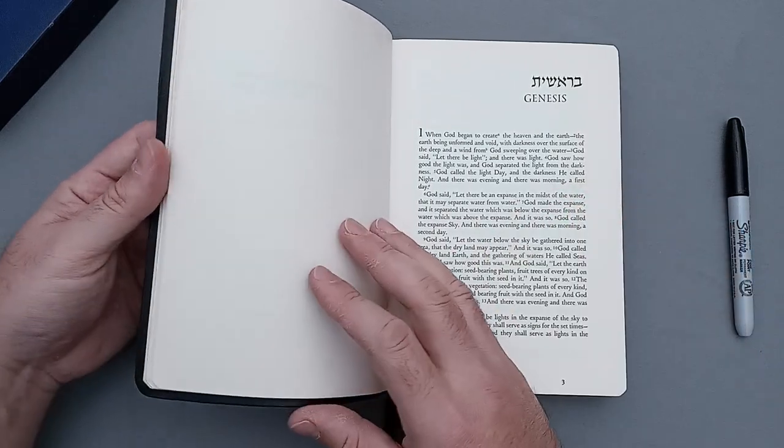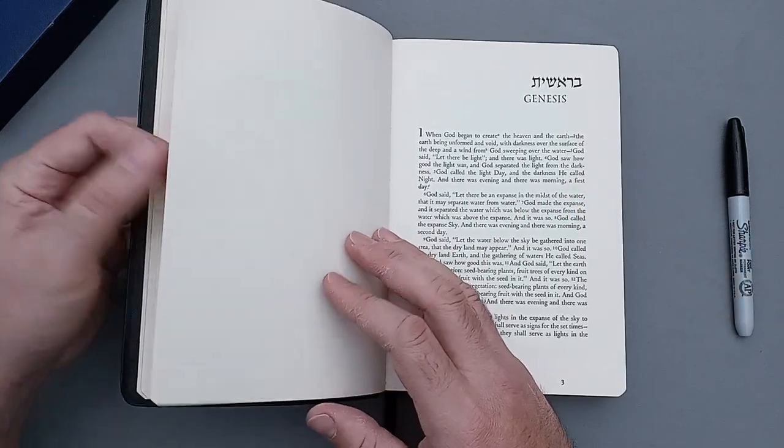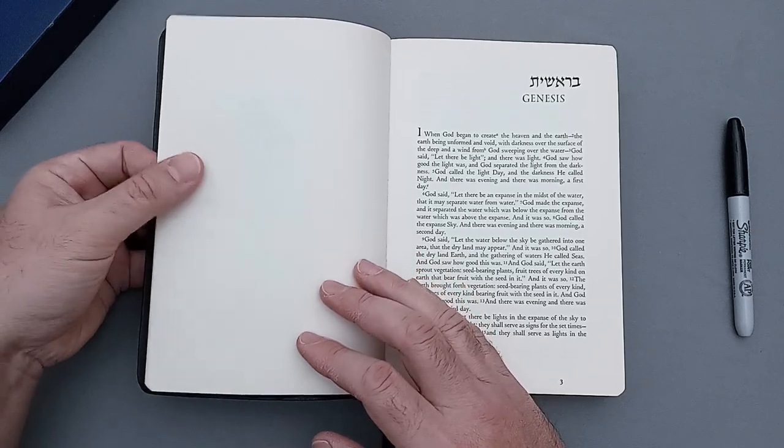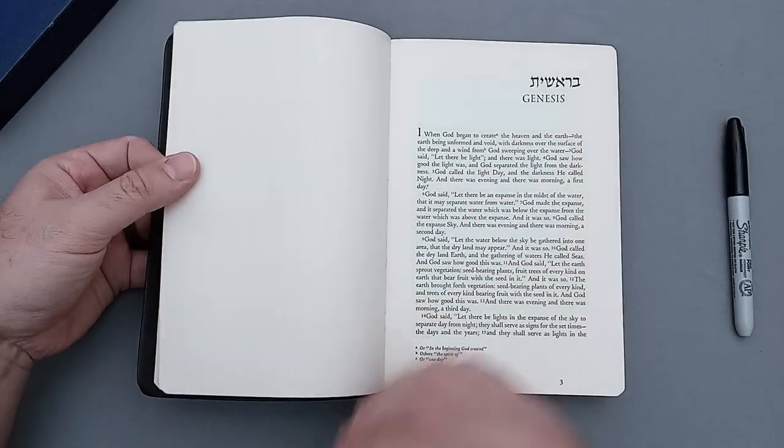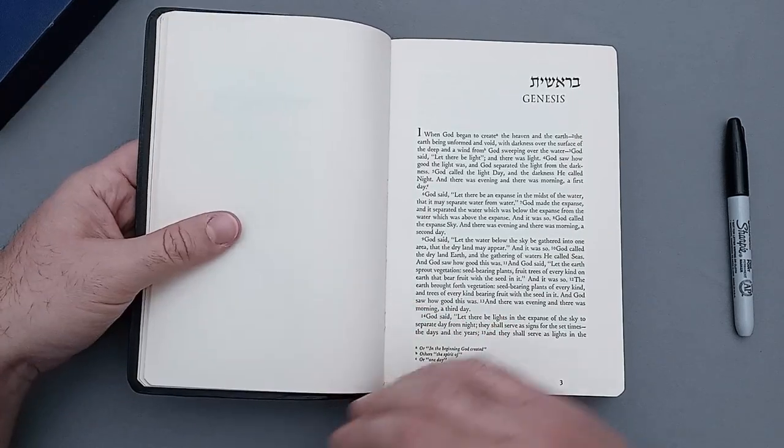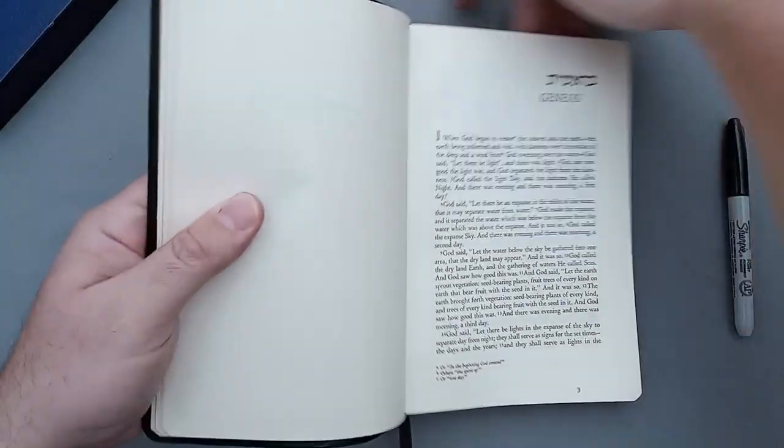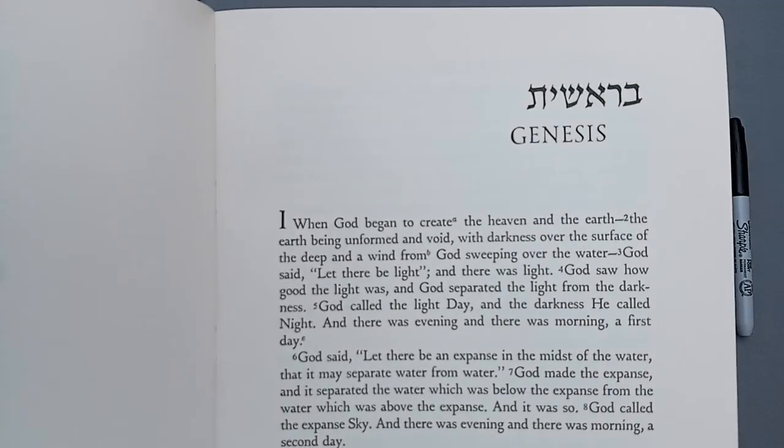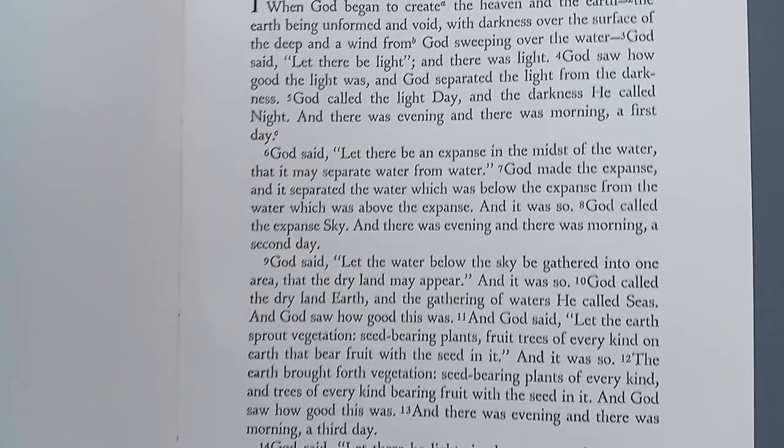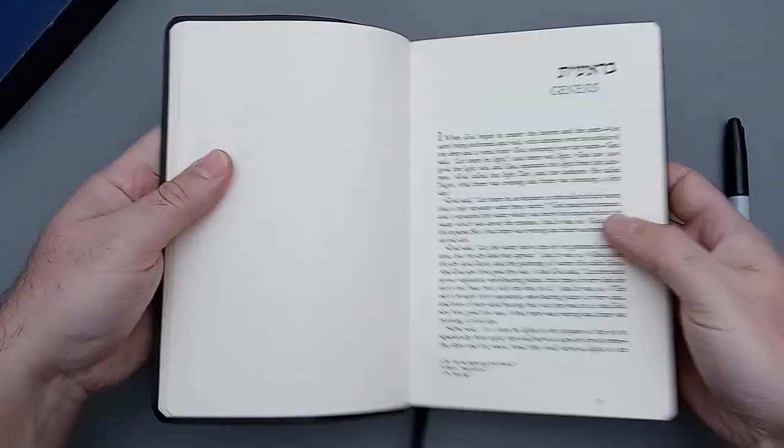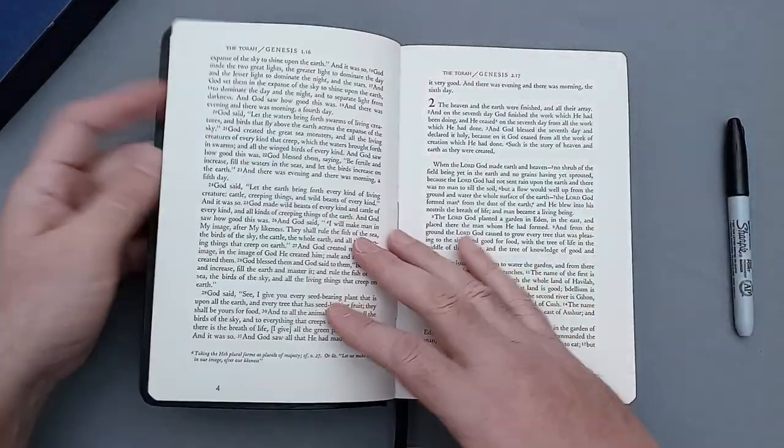Right out the gate, this paper is incredibly thick. I don't know, maybe like a high 40s, low 50s GSM. It's very thick paper and you can see very little show-through. Let me go ahead and get you guys in close here so you can see some of the text. There are footnotes.